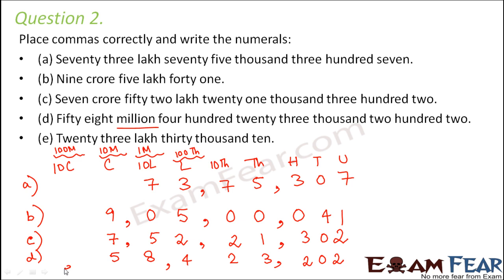Now let's look at the last one: 23,30,010. So 23,30,000 and 10. The 10 would be in the 10s and units place, so the 100s place will have a 0. Basically whenever you have to write in numerals, first you write down the positioning of the digits — units, tens, hundreds, thousands, etc. Then depending on whether it is the Indian system or the international system, you write the positioning accordingly, and then just reading the name you start putting the digits at their appropriate places.